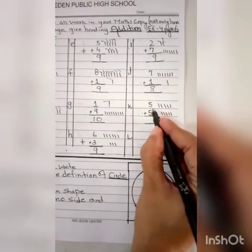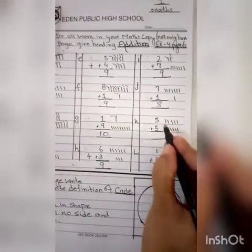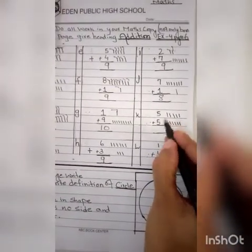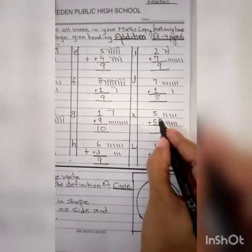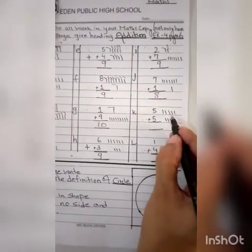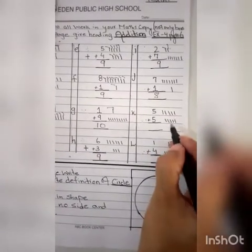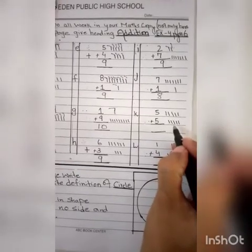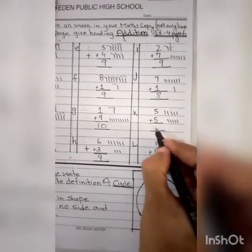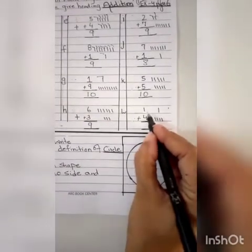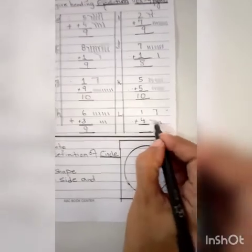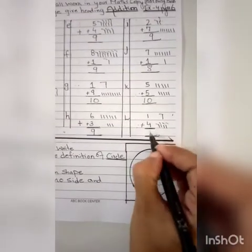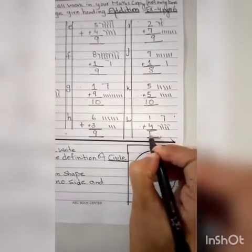K pe aa jaaiye — 5, aur again 5. Yarni aap log bas dono number ek jaisi hain, teacher! Toh dekho, jab do number ek jaisi hain toh unka answer kya aa raha hai? Count 5: 1, 2, 3, 4, 5, aur plus 5 ko count karayenge: 6, 7, 8, 9, 10. Iska answer kya aaya? 10. And the last sum is 1 plus 4. Plus 4: 1, 2, 3, 4. Answer hamara 1 plus 4 = 5.